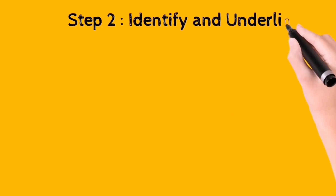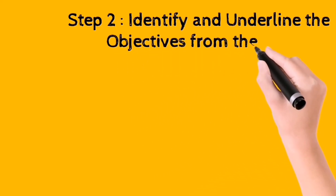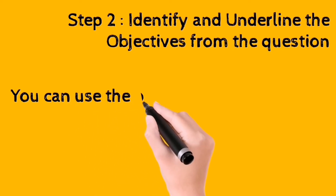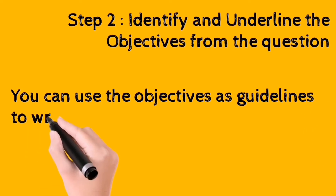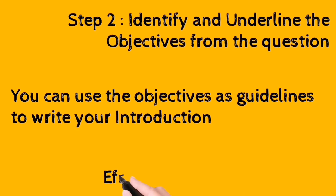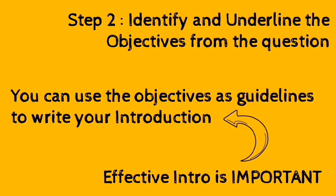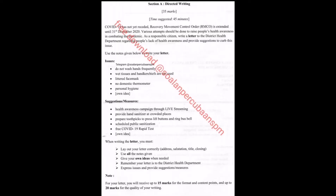We move on to step number two. In step number two, you need to identify and underline the objectives from the question. You can use the objectives later on as guidelines, and these guidelines will help you write an effective introduction. An effective intro is really important to make your essay interesting.